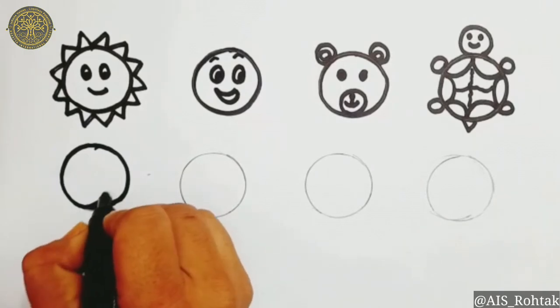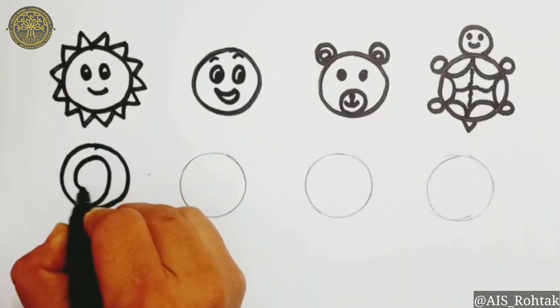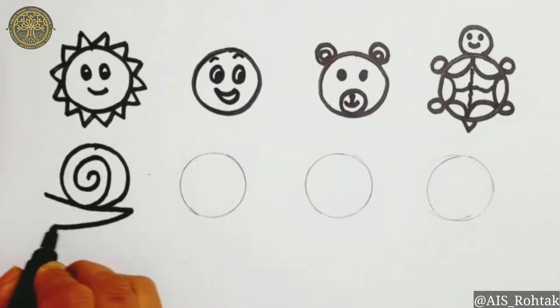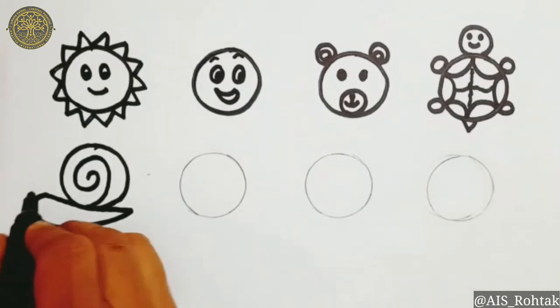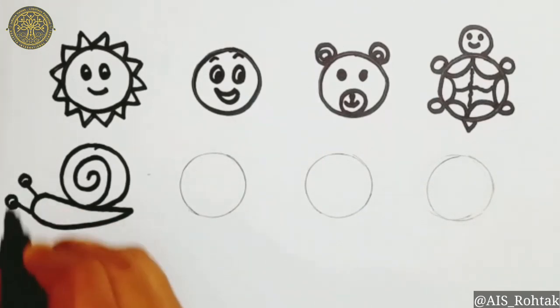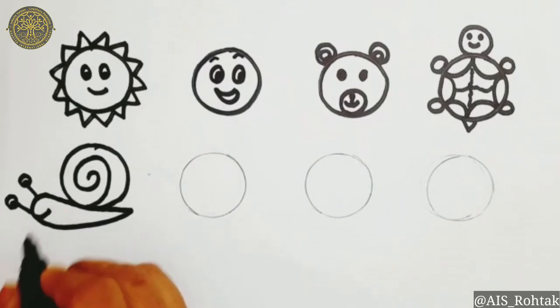Now come to the next circle to outline. We are going to draw a snail. Just draw a spiral in the circle like this. Then a V shape which is touching to this circle. Now draw two standing lines and a circle for the eyes. Fill the half circle and a smile. Our snail is ready.